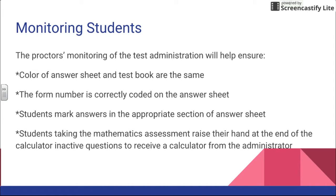As you're walking around the room, you can help monitor that the color of the answer sheet and the test book are the same. The test books will be off-white or white, but there will be a little band across the bottom that will be the same color as the answer sheet. They'll also have a form number to write on their answer sheet that matches the code on the front of the test book — but that happens during instruction time, so it won't be something you'll need to double-check once testing begins.